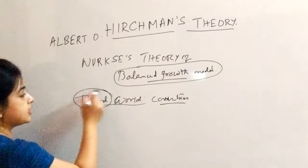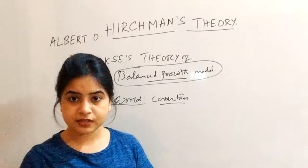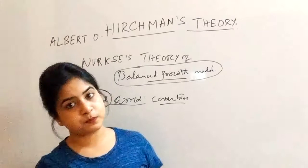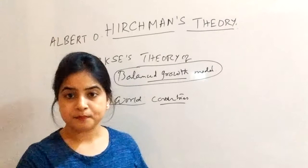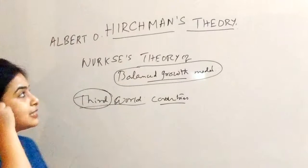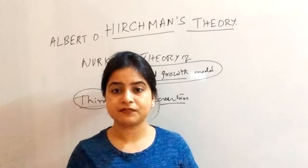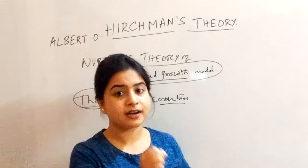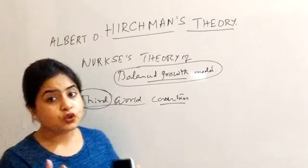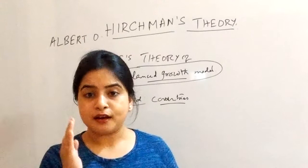Hirschman has said that the third world countries cannot possibly maintain a balanced growth model. The perspective of a balanced growth model is not possible for the third world countries or the very poor countries. In these situations, the mechanism of their own balanced growth model is not something they can afford to achieve.